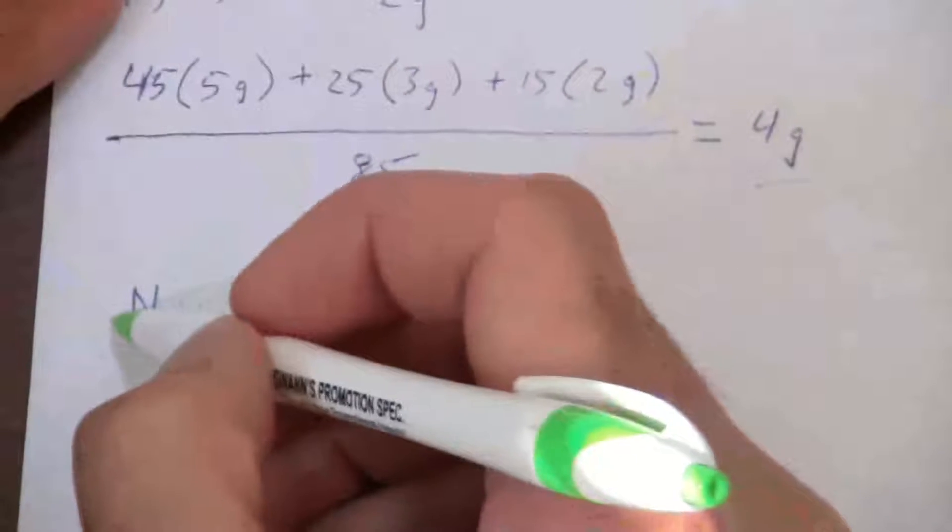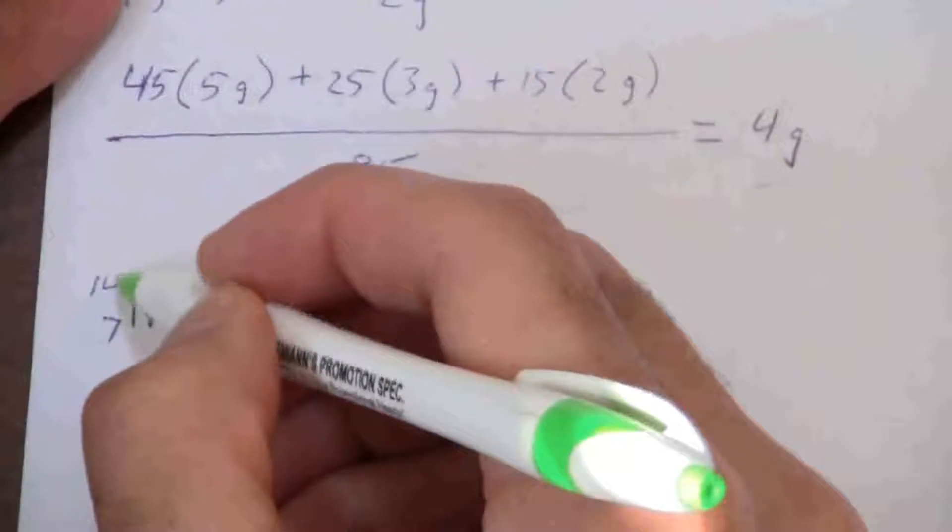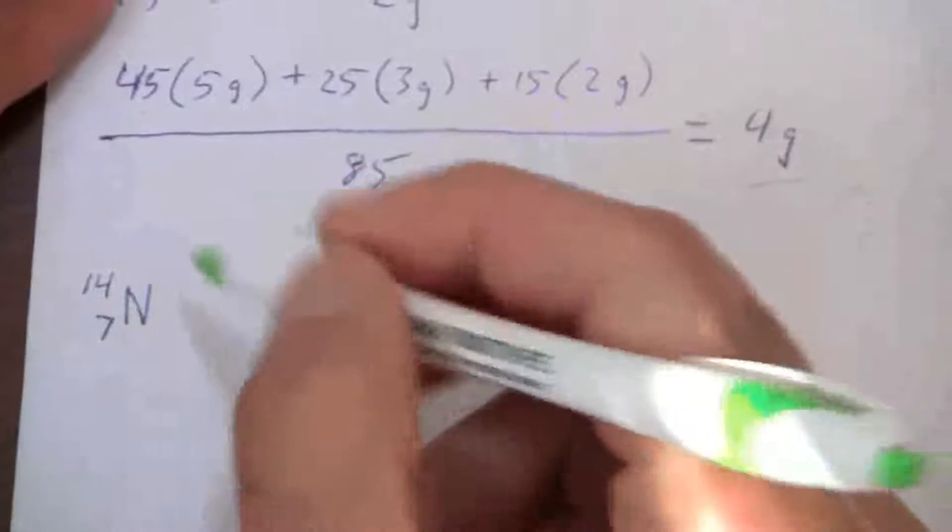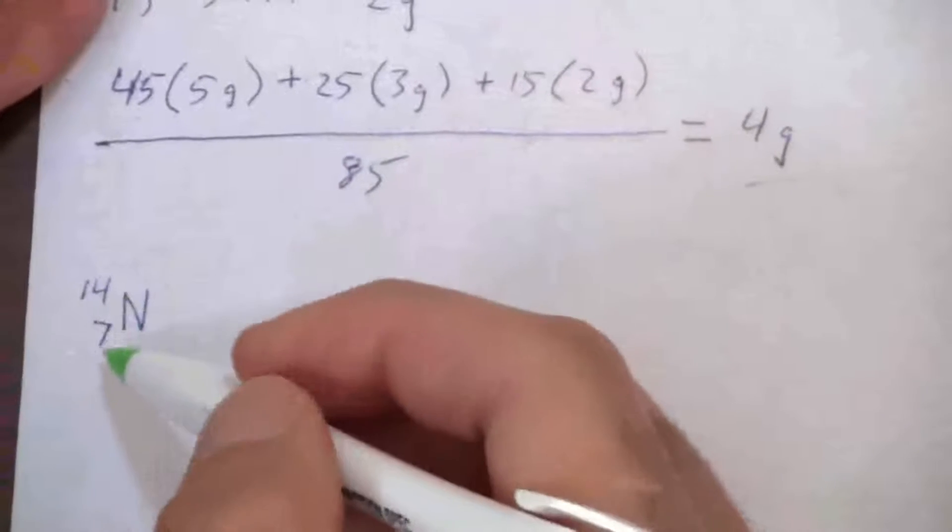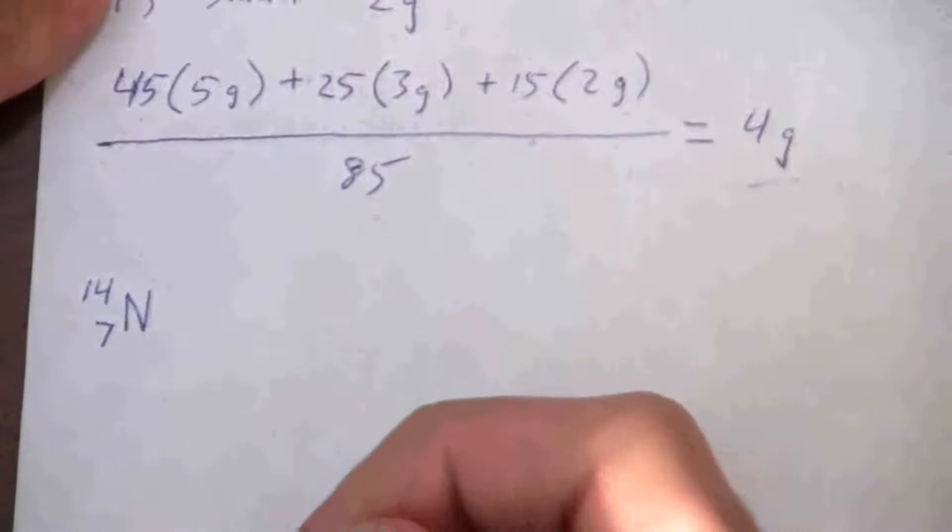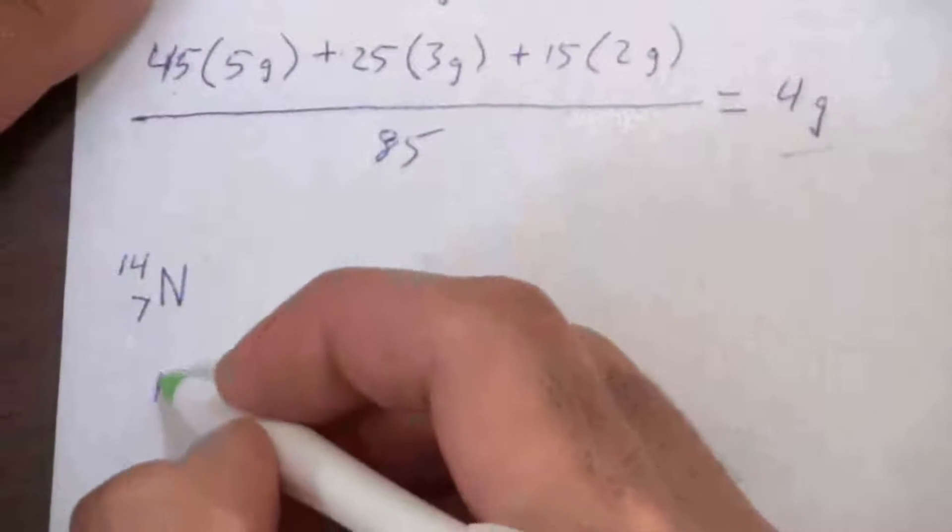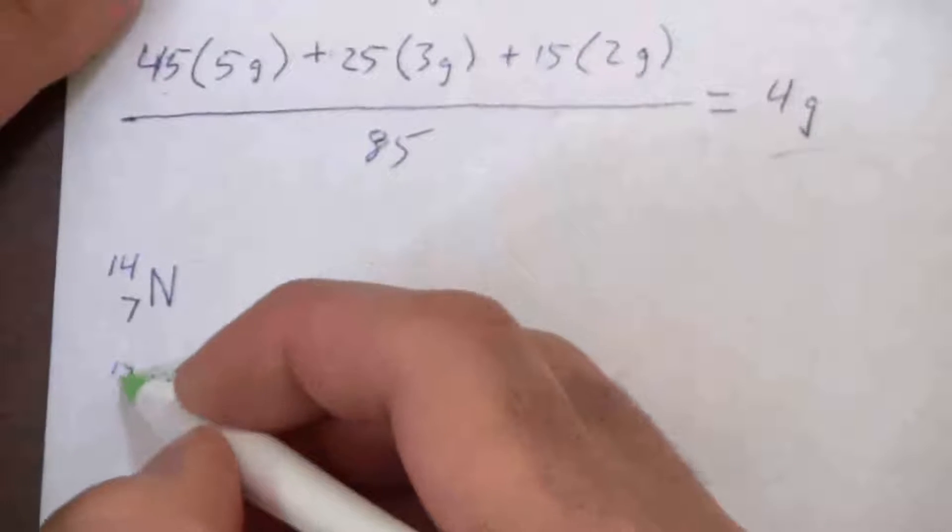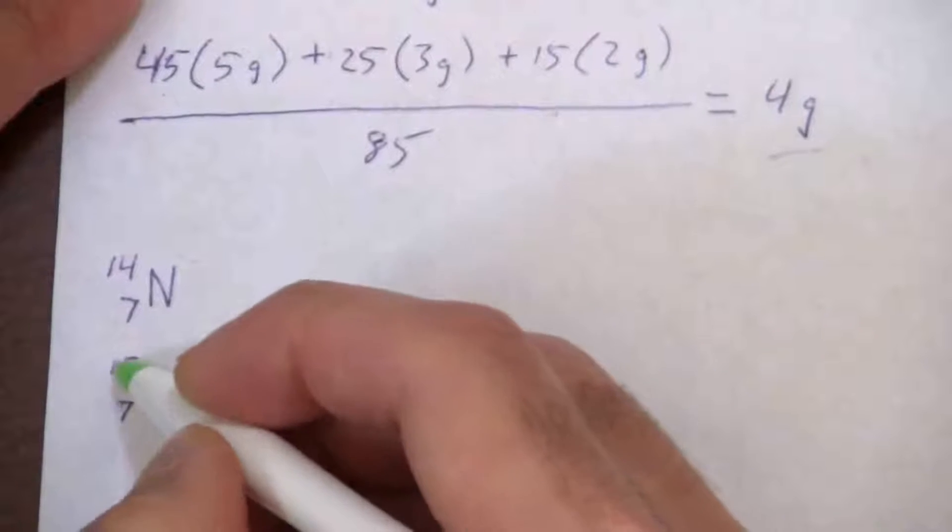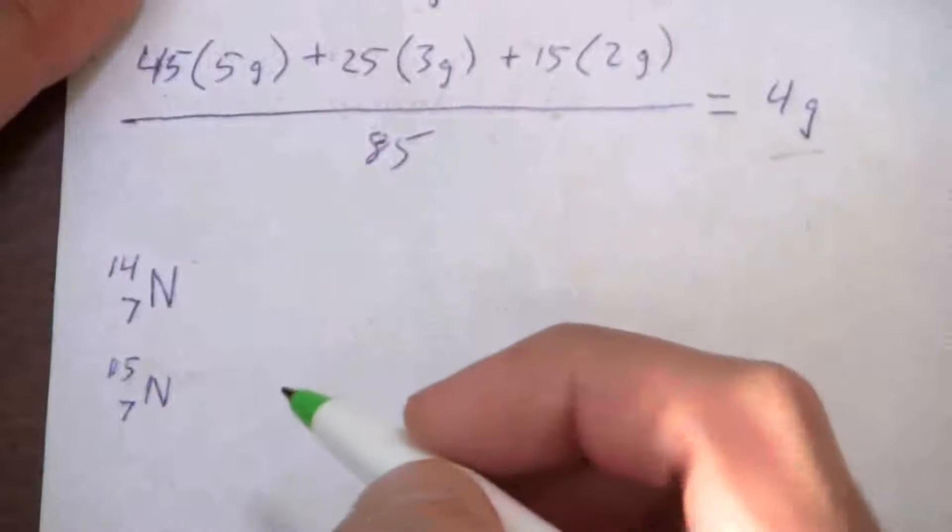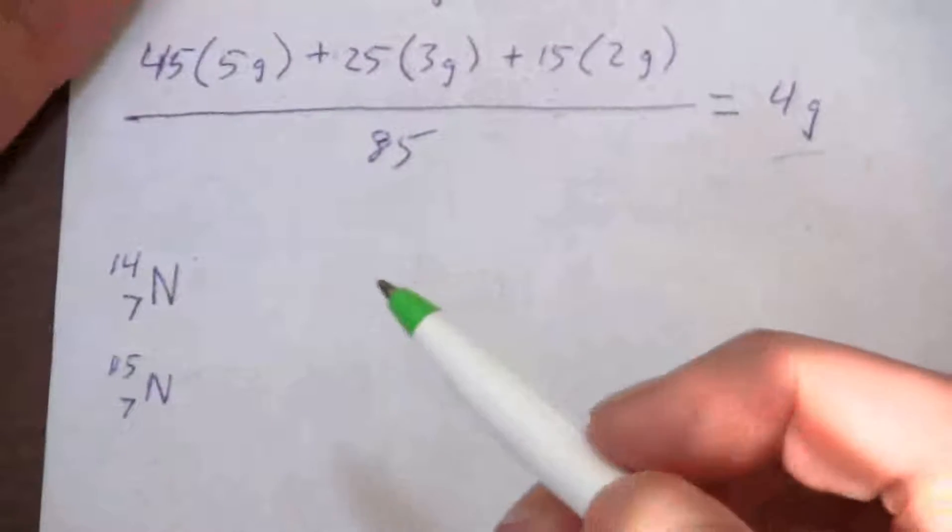So nitrogen has seven protons, and if I'm talking about the isotope that has seven neutrons, it will have a mass number of 14. So that's one isotope. Another isotope of nitrogen that naturally occurs in nature has eight neutrons. That would give it a mass number of 15. These are the two isotopes of nitrogen that exist in nature.